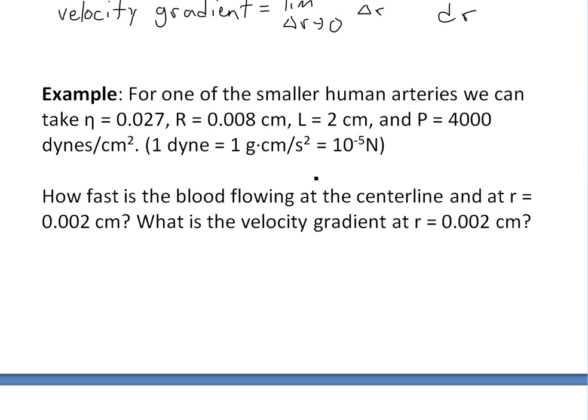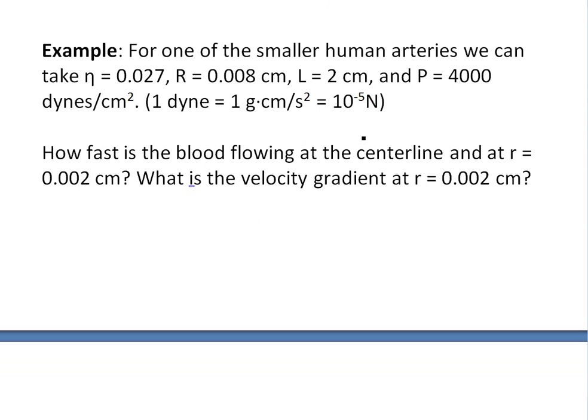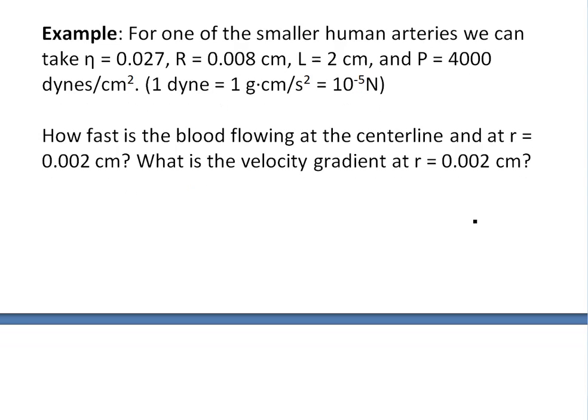The questions are: how fast is the blood flowing at the centerline and at r equals 0.002 centimeters, and what is the velocity gradient at 0.002 centimeters away from the axis?